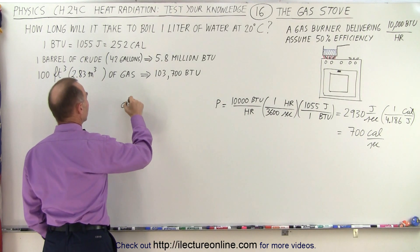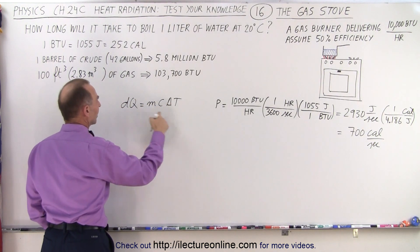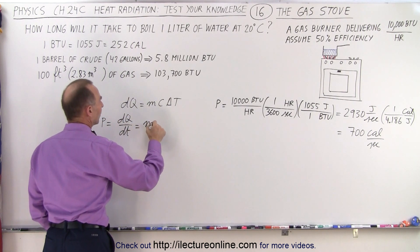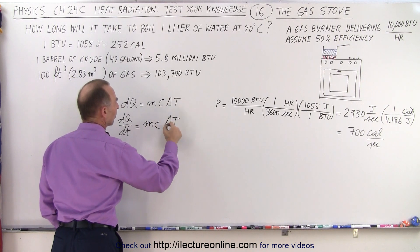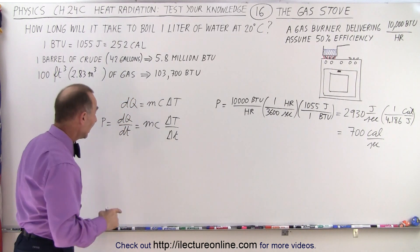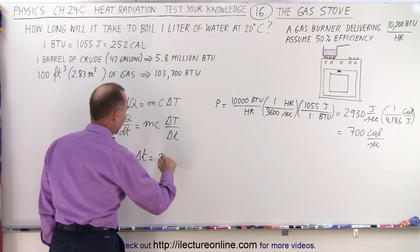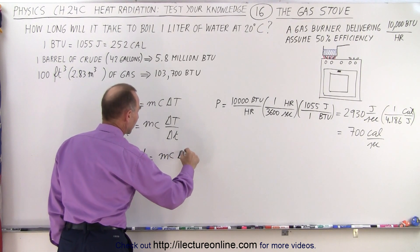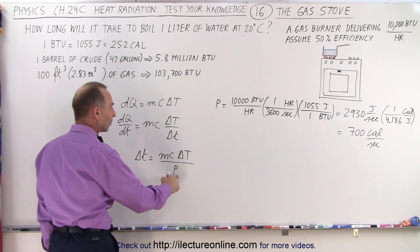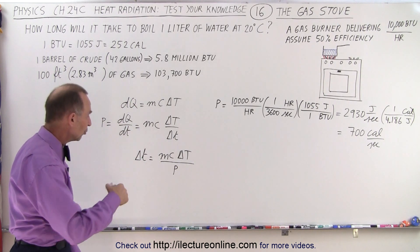So, again, we start with the equation that DQ is equal to MC delta T. And dividing both sides by DT, we get power is equal to DQ/DT, which is equal to MC delta T divided by delta small t. Large T is temperature, small t is time. And then, we solve that for delta t. So, now we have delta t is equal to MC delta big T divided by the power. Of course, we are going to have to multiply the power times the efficiency because it's only half of the total energy.